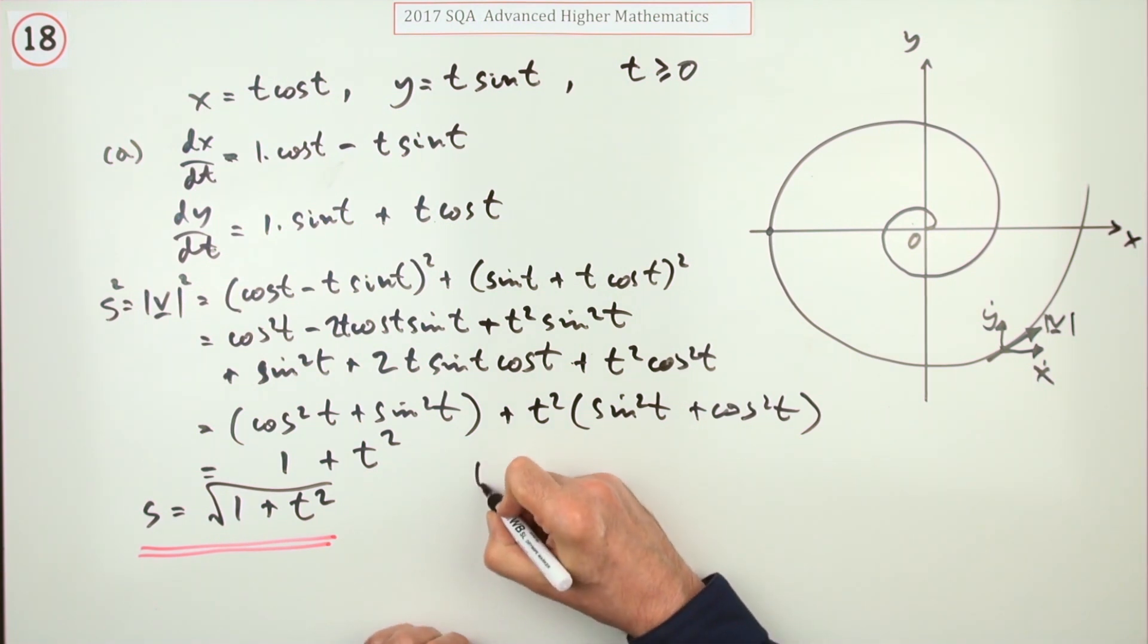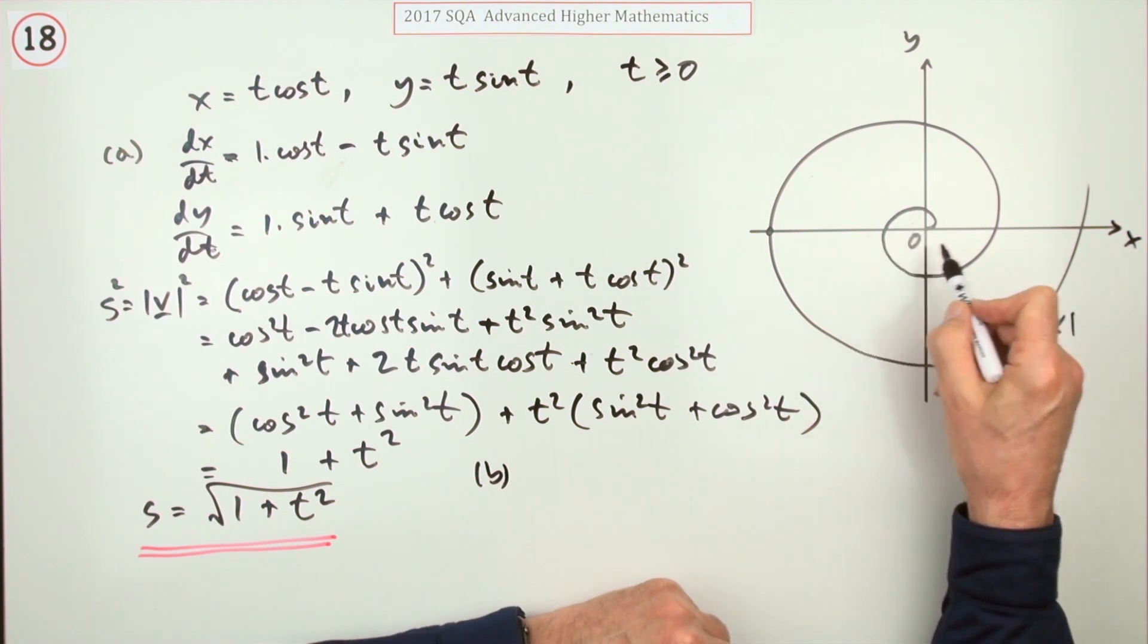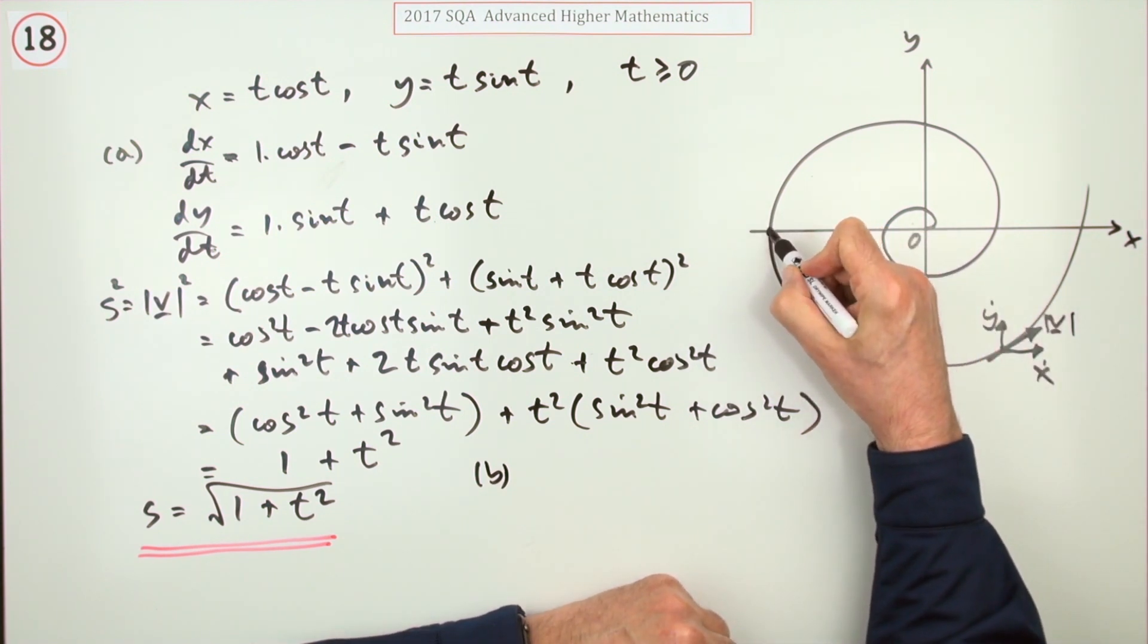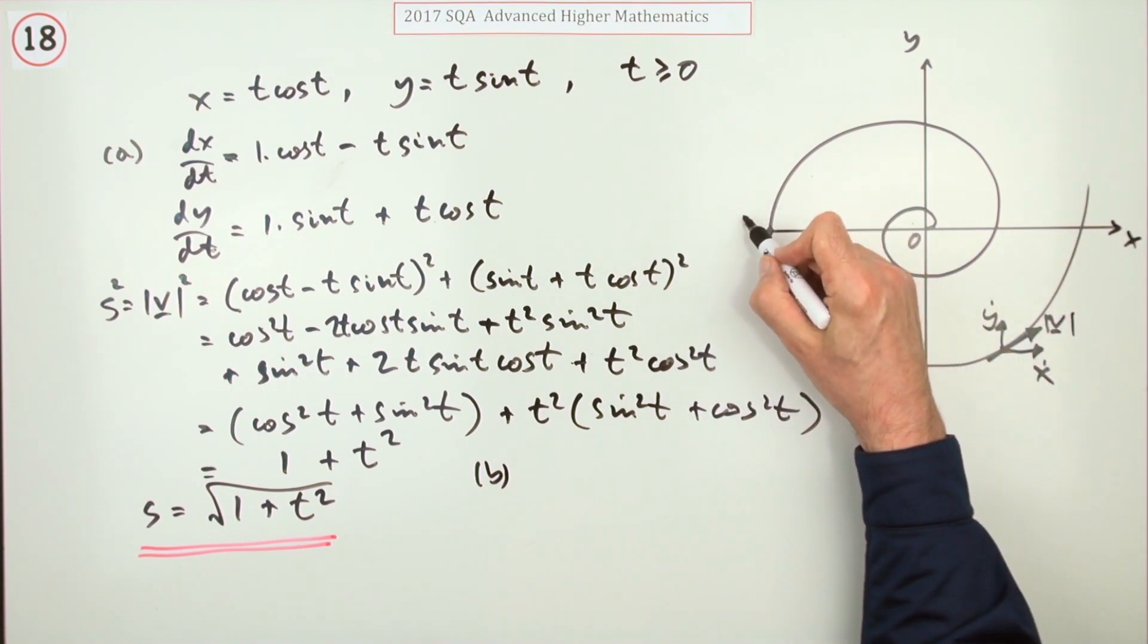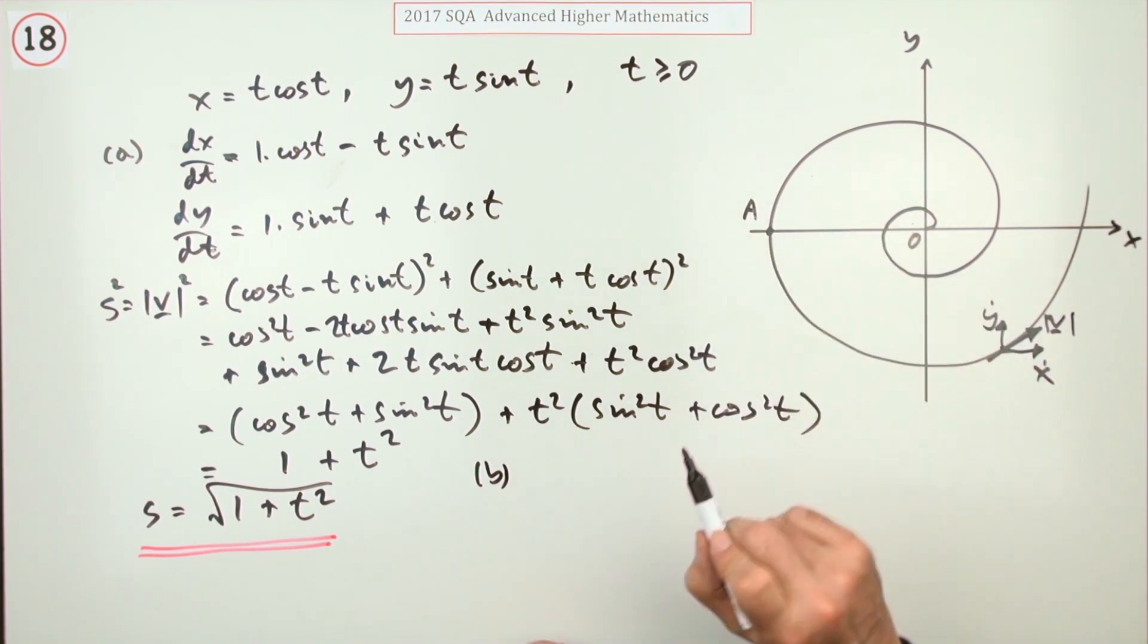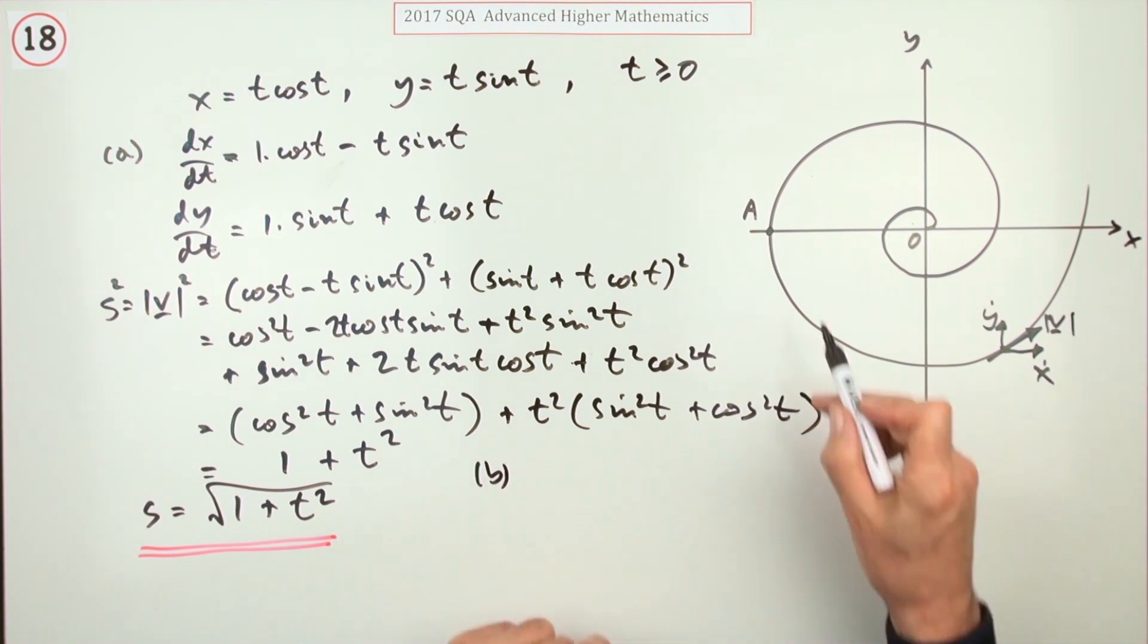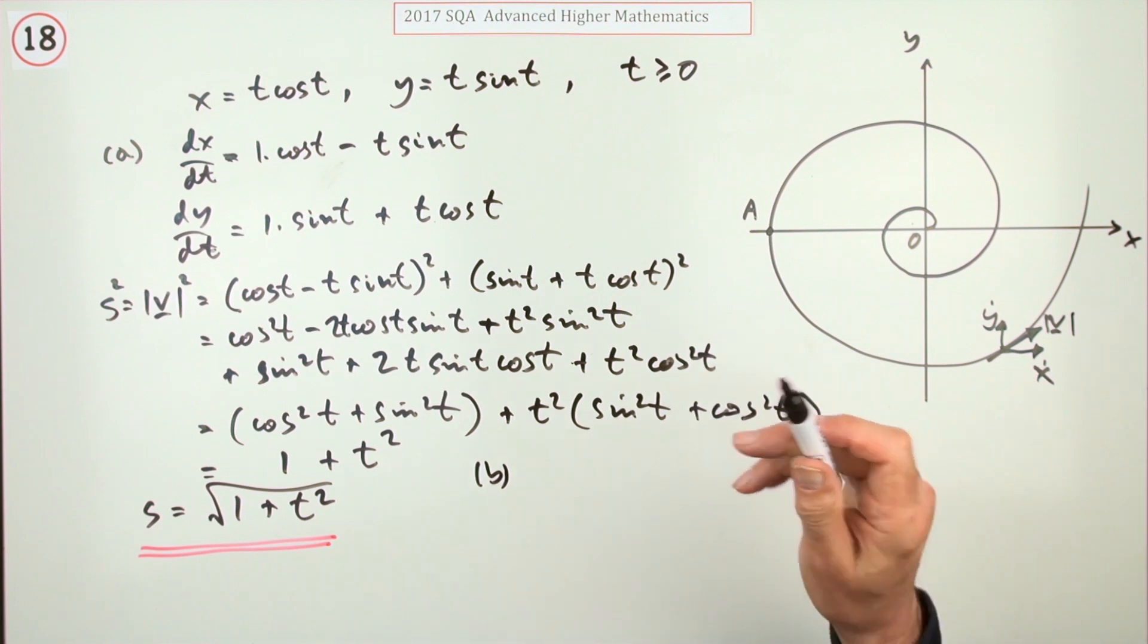Now there was a part B for two marks which was something to do with the second time. There was a point here, probably called A. What was its speed at point A?